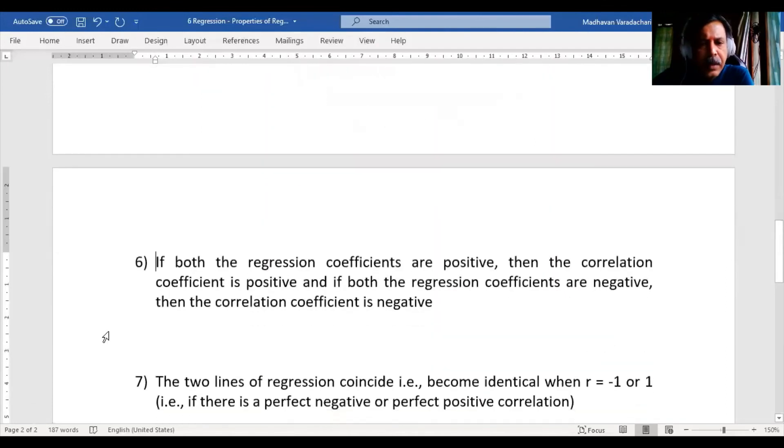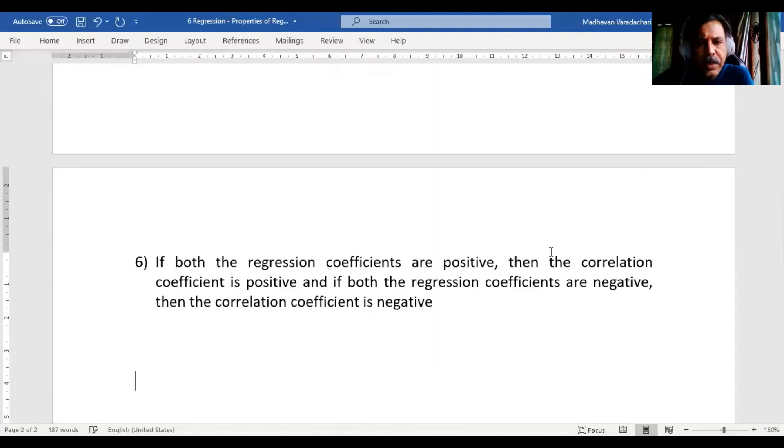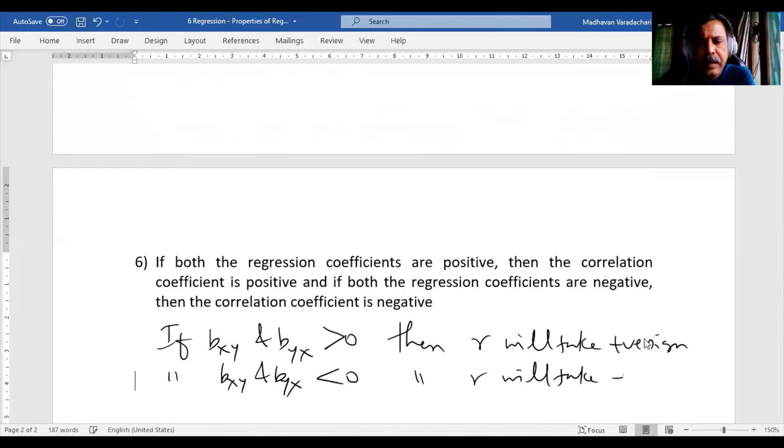The next property: if both the regression coefficients are positive, then the correlation coefficient is positive. If b_xy and b_yx are greater than zero, then r will take a positive sign. If both are less than zero, then r will be negative. That is what this property means.